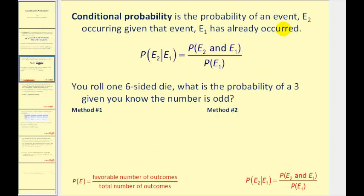Conditional probability is the probability of an event E2 occurring given that event E1 has already occurred. The probability of E2 given E1 is equal to the probability of E2 and E1 divided by the probability of E1.